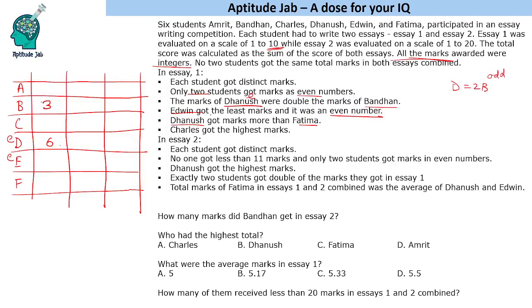Edwin got the least marks and it was an even number, so Edwin gets 2 marks. Dhanush got more marks than Fatima, and Fatima must be greater than 2. It cannot be even and cannot be 3, so Fatima must be 5 — the only odd number less than 6 that works. Now the remaining two values are 7 and 9. Charles got the highest, so Charles gets 9 and Amrit gets 7. SA1 is complete.